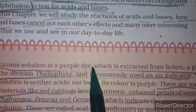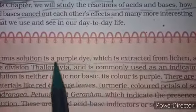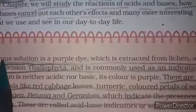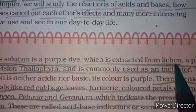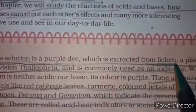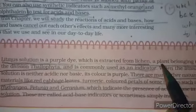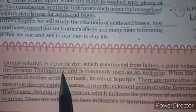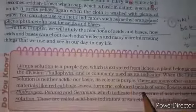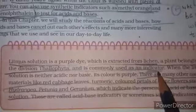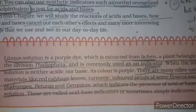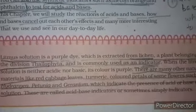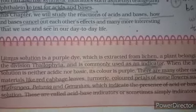The litmus solution is a purple dye extracted from the lichen plant, belonging to the division Thallophyta. This plant is commonly used as an indicator to predict whether a substance is an acid or a base.